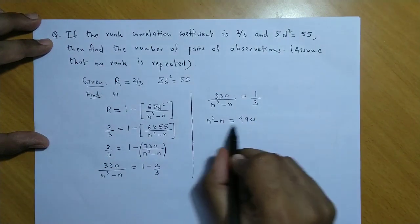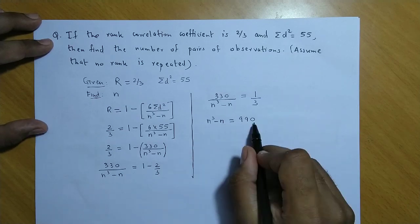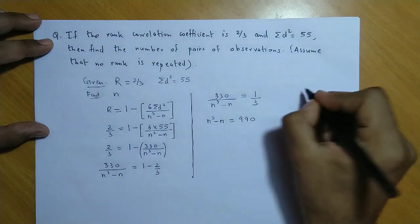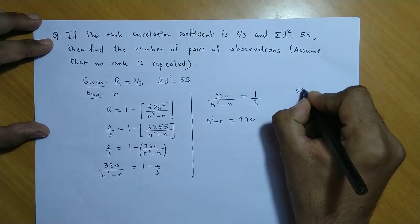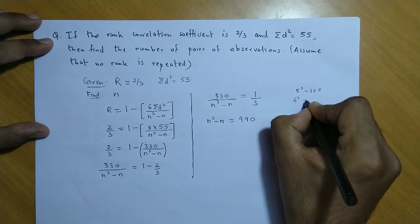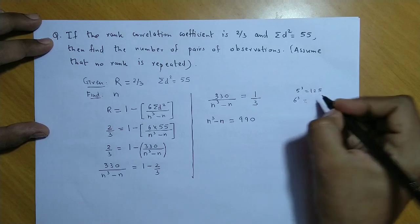Ab, isse hume direct bhi obtain kar sakte hai n ki value without actually solving the equation. Aapko cube values aani chahiye hai. Ab agar aapko yaad ho: 5 cube ki value hoti hai 125, 6 cube is 216.